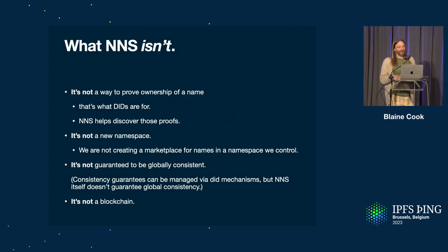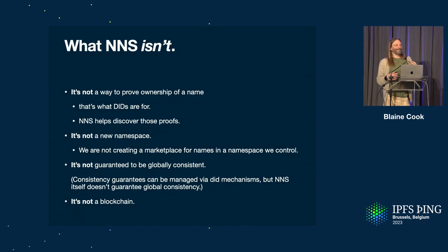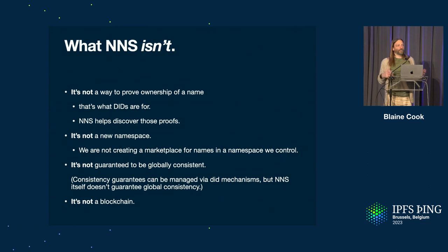It's not a new namespace — and this is a personal bugbear. There are a lot of systems where people go and create new namespaces and basically say "we've got a new namespace, it's secure, it's got all these great properties, pay us five bucks and we'll sell you a name." I feel like this is quite a cynical capture. From a regulatory standpoint, it's never going to be different than ICANN, because ICANN has fought through all the regulatory uphill battles and come up with a regulatory structure that's pretty good. You could run NNS internally to your organization and have your own namespace independent from ICANN — great, away you go. But I don't think the solution to this problem is to create new namespaces.